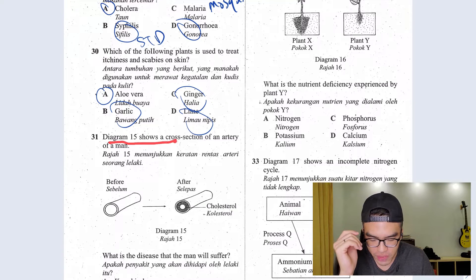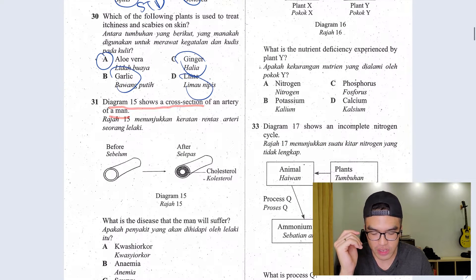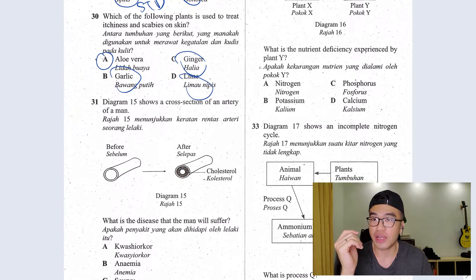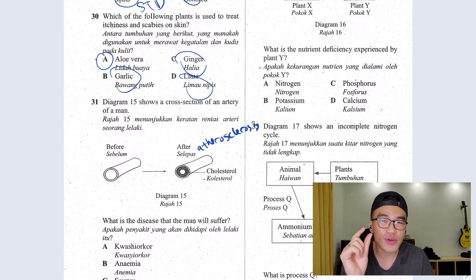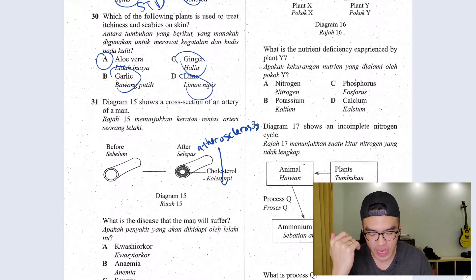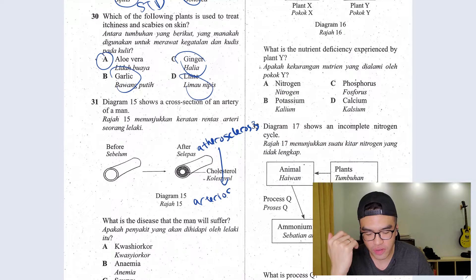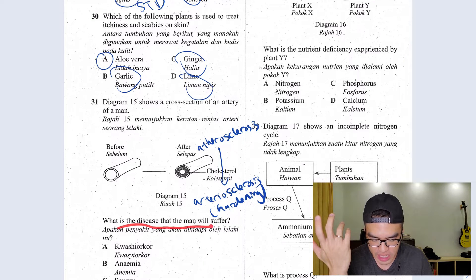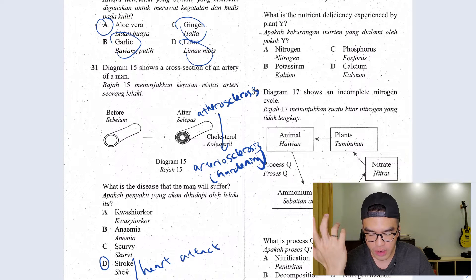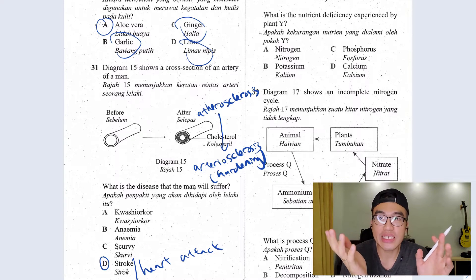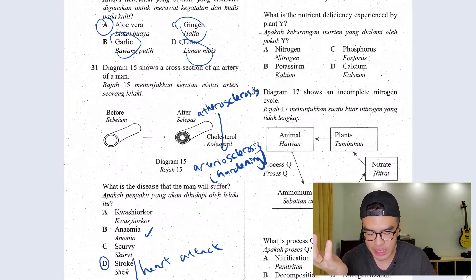Question 31, diagram 15 shows a cross-section of an artery of a man. So when you have your artery full of cholesterol, this is what we call atherosclerosis, which is the narrowing of the artery. Of course, this will usually happen together with arteriosclerosis. That would be the hardening of your arteries. What is the disease that the man will suffer? Stroke or heart attack? Kwashiorkor is the African disease with the huge stomach. Anemia is when you have lack of red blood cell. Scurvy is when you have bleeding gum due to the lack of vitamin C.